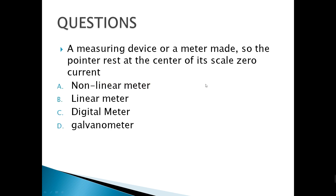A measuring device where the pointer rests at the center of its scale at zero current — what do you call that? We call that a galvanometer. A galvanometer is a device used to measure a very small amount of current.